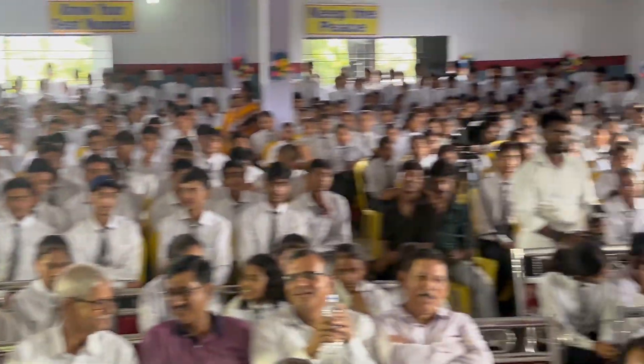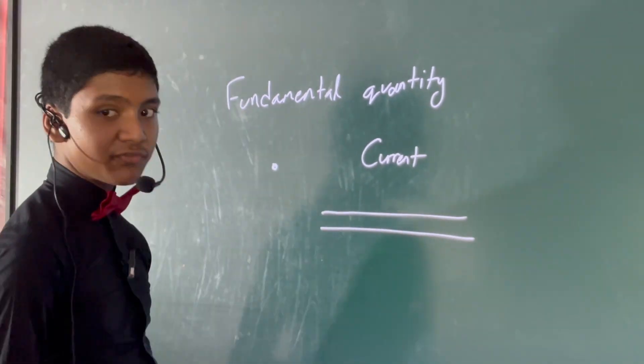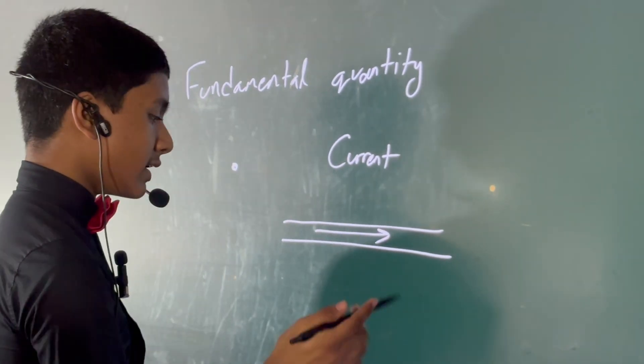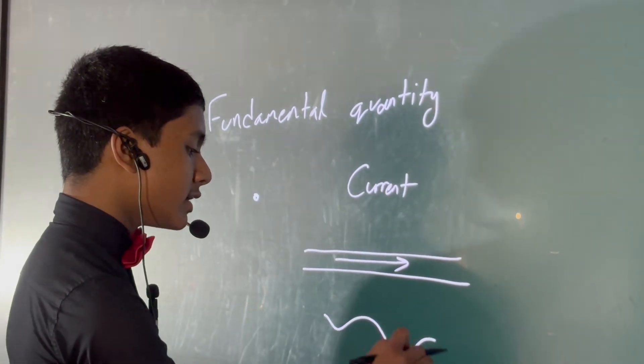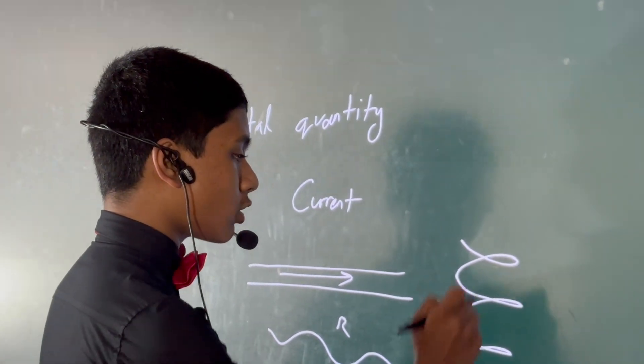And they choose current as a fundamental quantity because almost every single thing in electromagnetism can be defined as a function of current or something related to current. Like voltage, you can relate it to current. Resistance, you can relate it to current. Induction, you can also relate it to current.